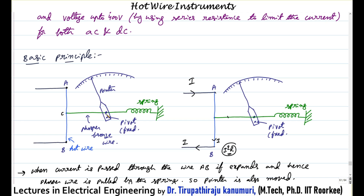It is connected through the pointer and the pointer is pivoted at this junction. Above this fixed point, the pointer can move. Whenever the wire is pulled this side, the pointer will easily move, and this wire will be connected to a spring which will always try to pull this phosphor bronze wire towards wire AB in the perpendicular direction.